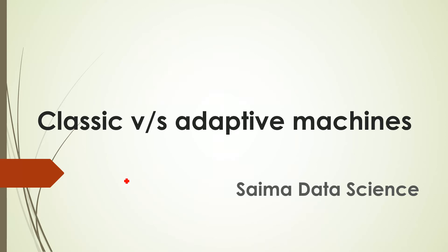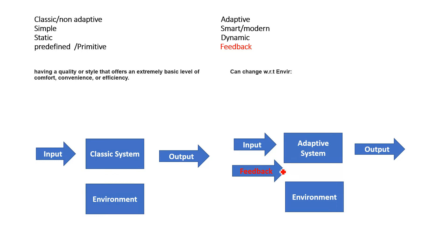In this lesson, I will explain to you classic versus adaptive machines. This is one of the very basic and simple concepts in machine learning. Here I have written some features of the classic machine and this is for the adaptive machine.